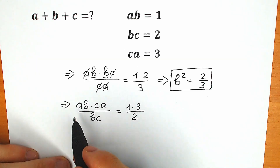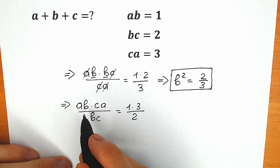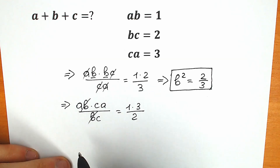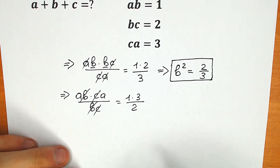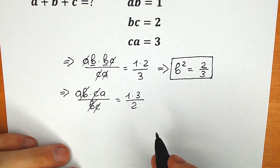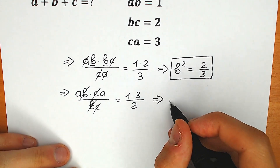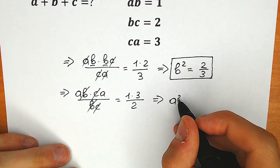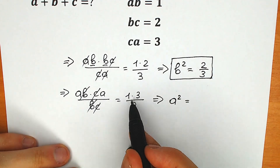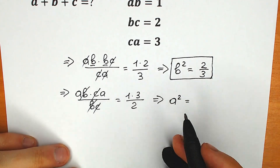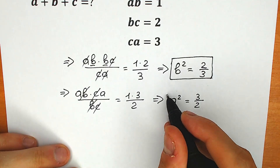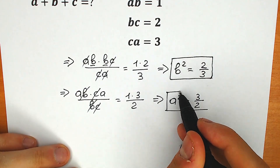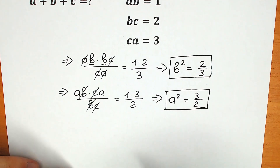On the left side we can easily cancel b, cancel b, and cancel c. As a result we have only a times a, which equals a squared. So a squared equals 1 times 3 over 2, which is 3/2. This is also an important fraction — a squared equals 3/2.